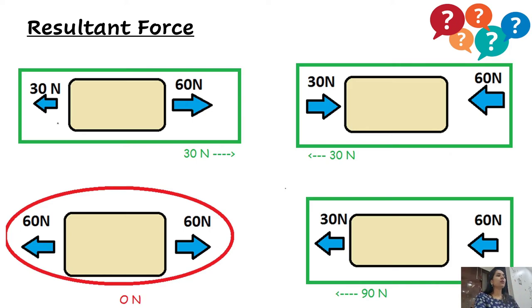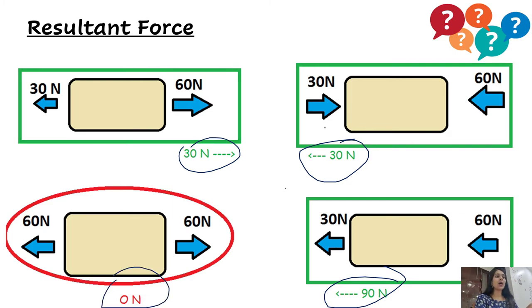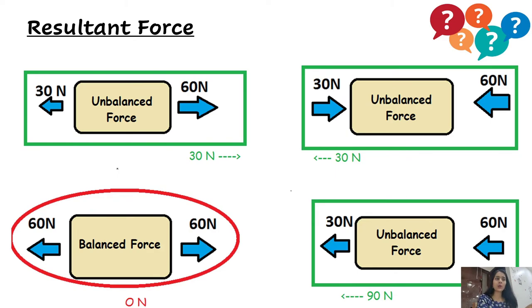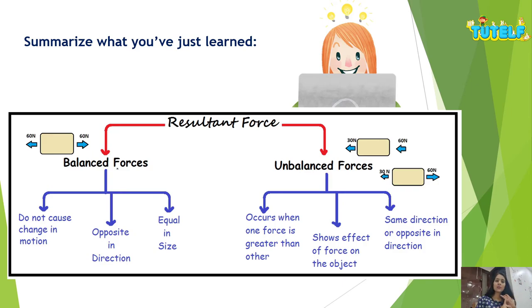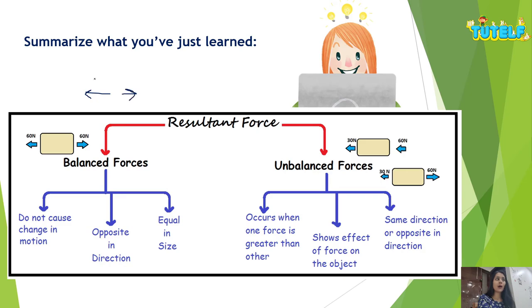To summarize: the resultant force in the first example is 30 Newton, the second is 30 Newton towards the left, the third is 90 Newton towards the left, and the last is 0 Newton. Cases marked green are unbalanced forces; the case marked red is the balanced force. Resultant forces are of two types — balanced and unbalanced. Balanced forces have a resultant of 0 Newton, are opposite in direction, and equal in magnitude, for example 60 Newton and 60 Newton acting on a box. Unbalanced forces occur when one force is greater than the other, causing a net resultant in the direction of the greater force.